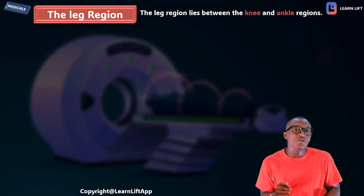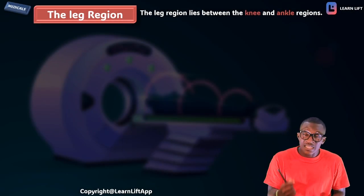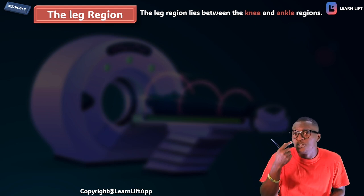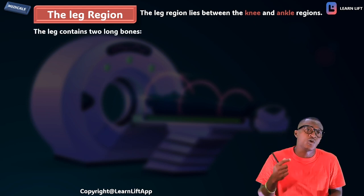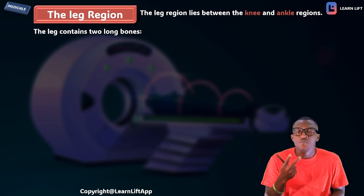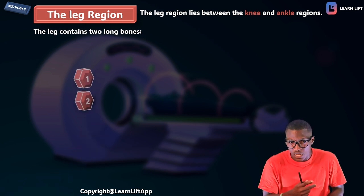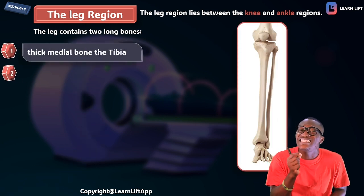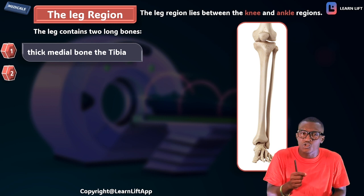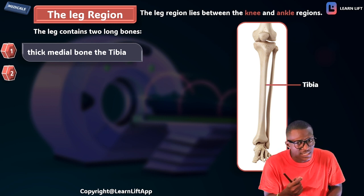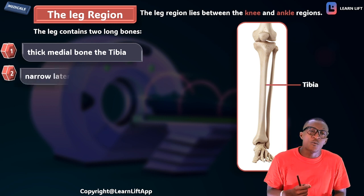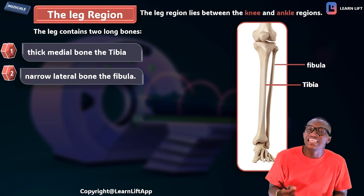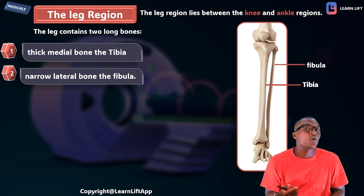The leg region lies between the knee and the ankle region. The leg region consists of two long bones. Word number one is the thick medial bone called the tibia, and word number two is the narrow lateral bone called the fibula.